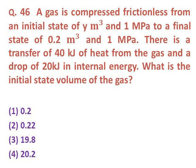Question forty-six: A gas is compressed frictionlessly from an initial state of [V] m³ and 1 MPa to a final state of 0.2 m³ and 1 MPa. There is a transfer of 40 kJ of heat from the gas and a drop of 20 kJ in internal energy. Solving this question, the initial volume is approximately 0.22 m³.